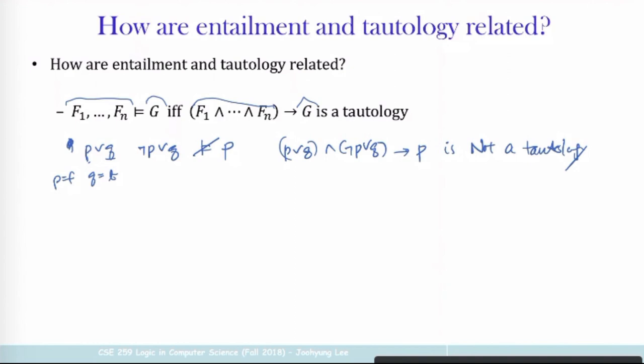If it is not a tautology, it means that there is one interpretation that falsifies this formula — and what is that interpretation? P is false, Q is true. It's actually the same thing: we need only one interpretation that makes this formula false, so we use the same interpretation. If you know the right-hand side formula is a tautology, the entailment holds; if the right-hand side is not a tautology, then the entailment does not hold.